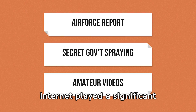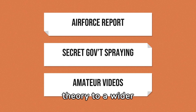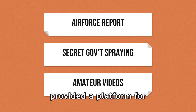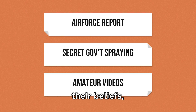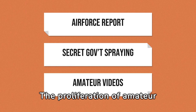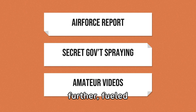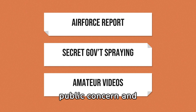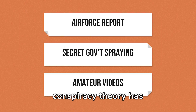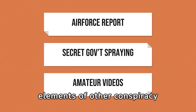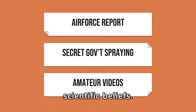The advent of the internet played a significant role in spreading the conspiracy theory to a wider audience. Online forums, blogs and social media platforms provided a platform for proponents of the theory to share their beliefs, exchange information and recruit new adherents. The proliferation of amateur videos and photographs purporting to show evidence of chemical spraying further fuelled public concern and speculation. Over the years, the conspiracy theory has continued to evolve and adapt to new developments, incorporating elements of other conspiracy theories and fake scientific beliefs.